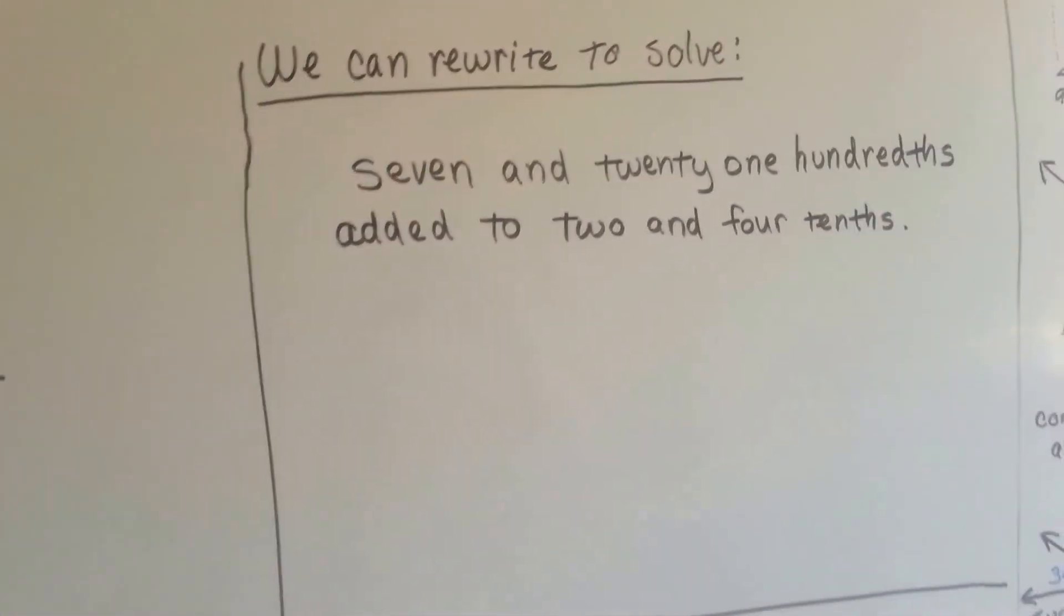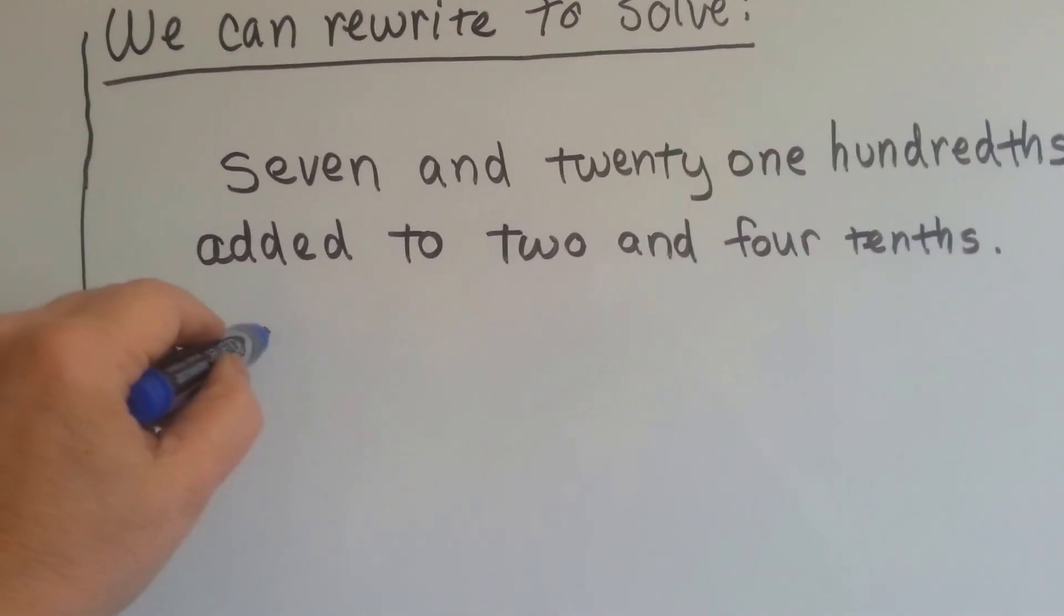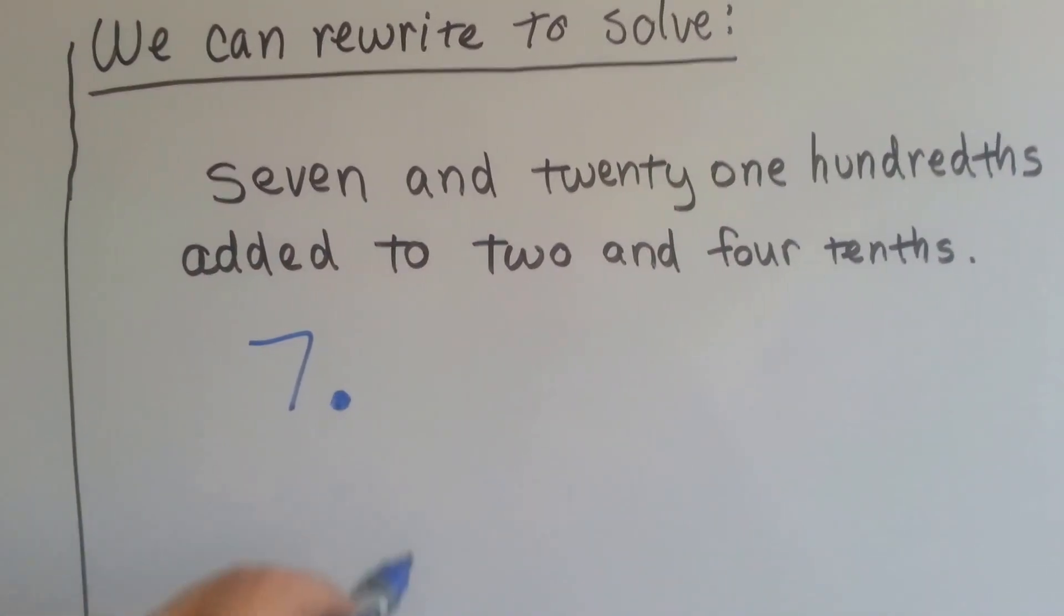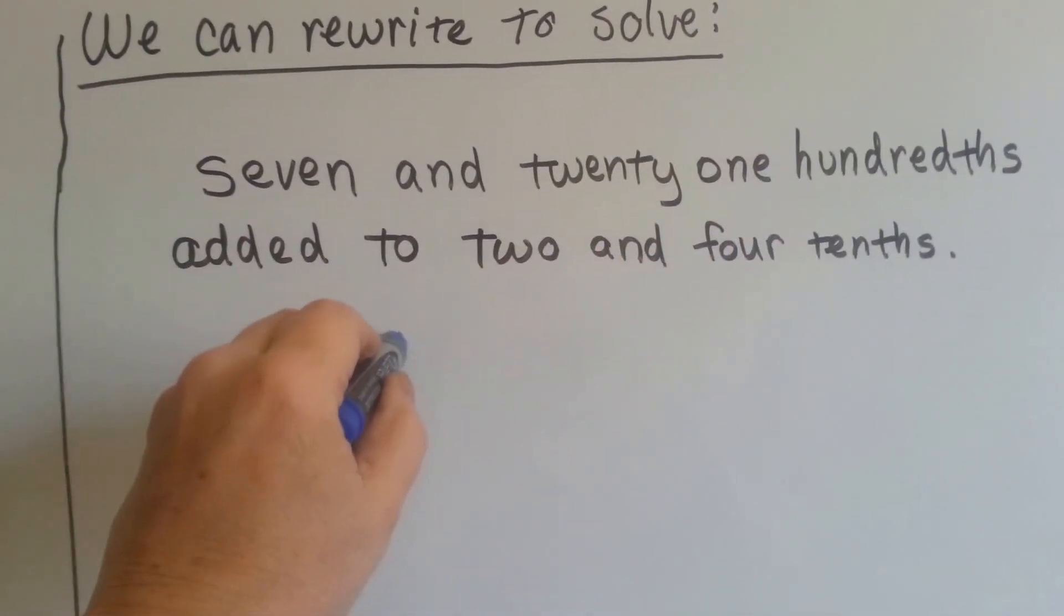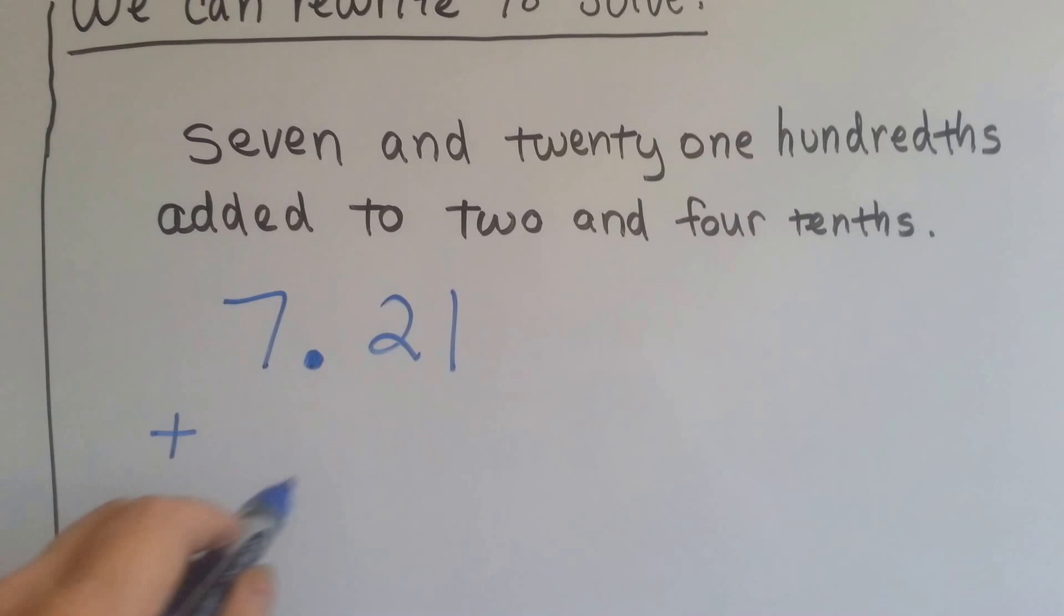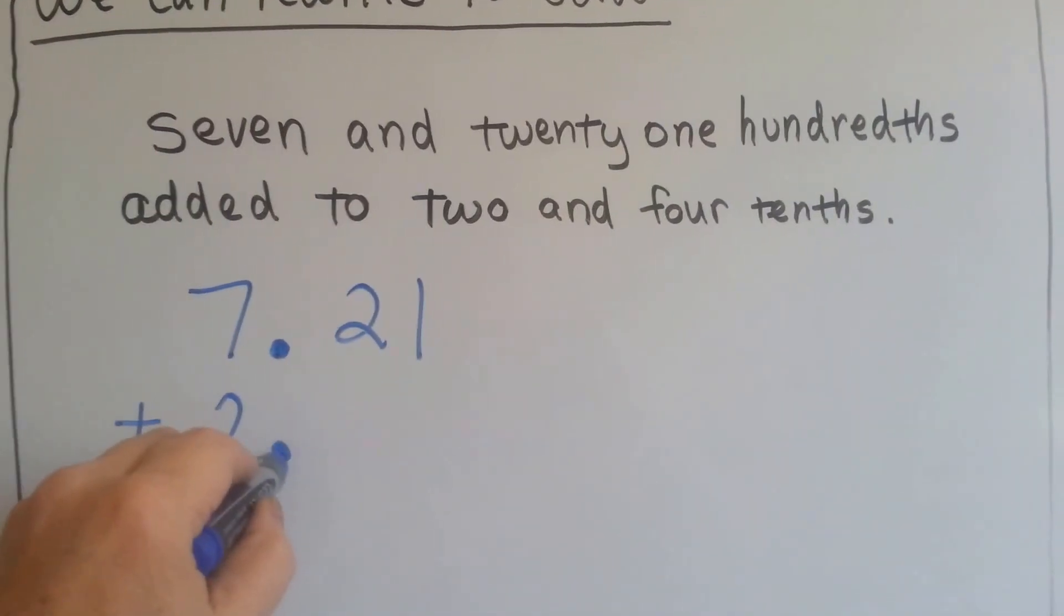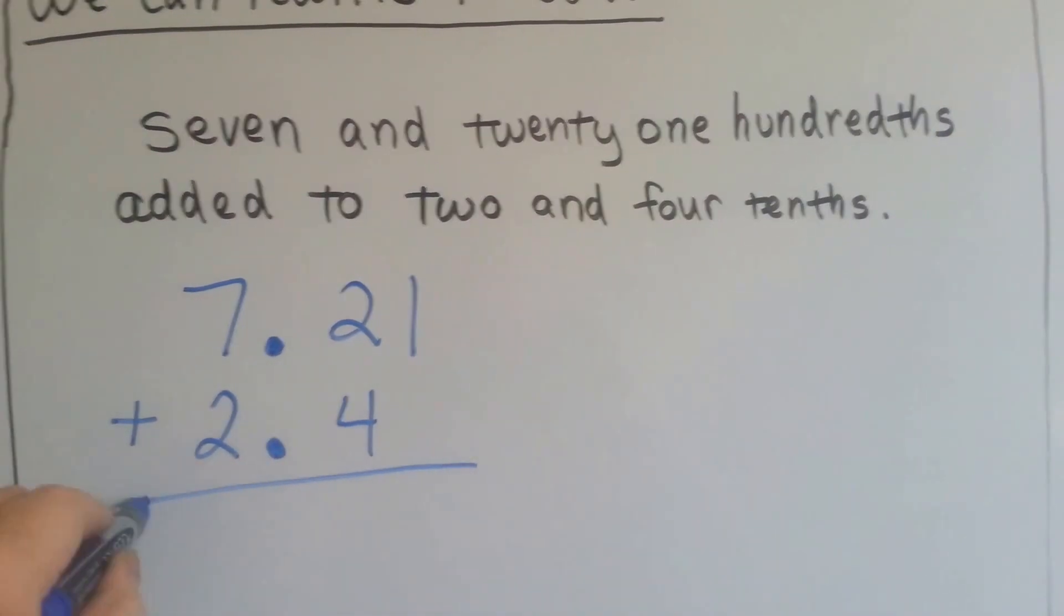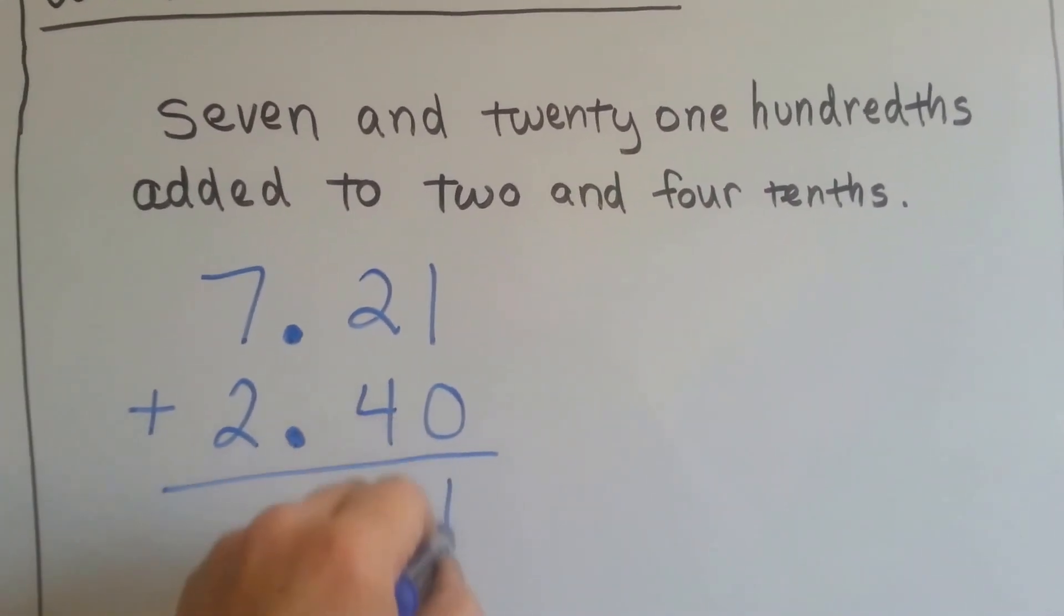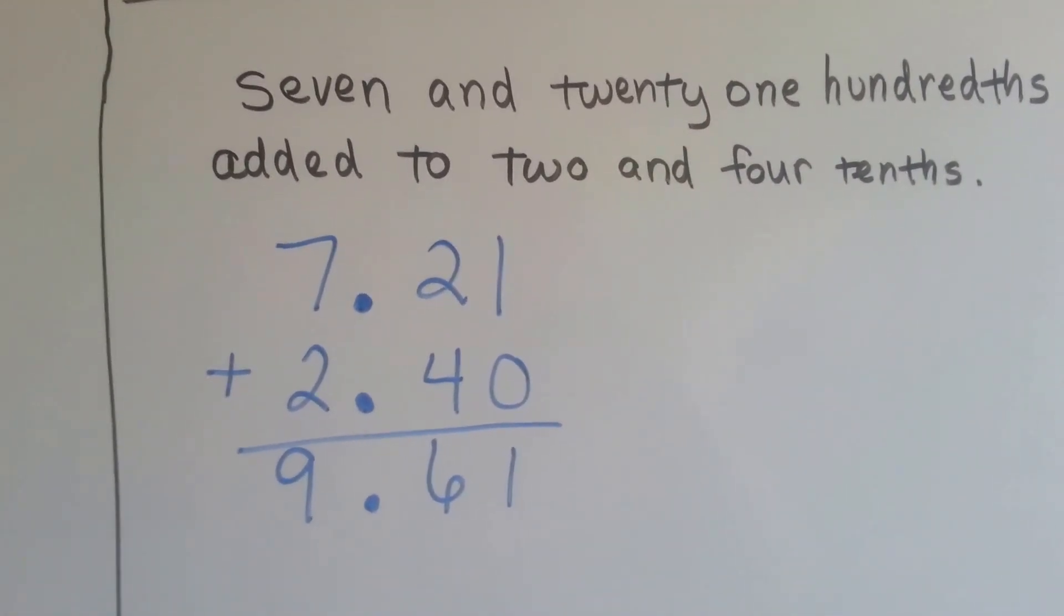We can also rewrite it to solve it if it's in word form. 7 and, tells me it's a decimal point, 21 hundredths added, plus mark, to 2 and 4 tenths. I can put in my invisible zero here to help me, and we have 9 and 61 hundredths.